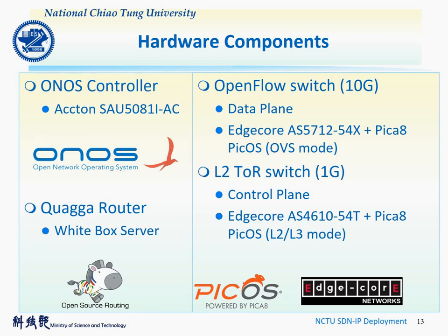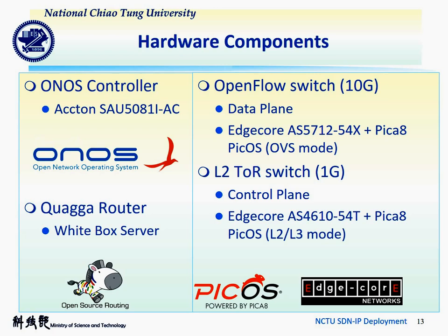Now, please allow us to introduce the hardware components we use. We use an Accton server as our ONOS controller, and a 1U white box server as the Quagga server. For the OpenFlow switch, we have H-Core AS5712-54X with commercial network OS PIC OS provided by PICA8 in OVS mode. We also choose the H-Core AS4610-54T with PIC OS L2 and L3 mode for the L2 type of rack.